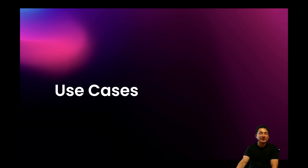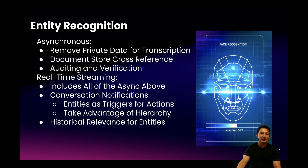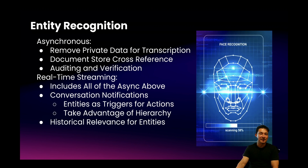Now that we have a good understanding about what entities are, let's talk about some very specific use cases that involve using them. In the asynchronous use case, entity recognition is primarily used for three things: one is for redaction or removing private data from the transcription; generating metadata around what entities are discussed in a given conversation for the means of cross-referencing between conversations; and then also for auditing and verification purposes. The real-time streaming use cases are a little bit more interesting — they include all of the things mentioned above in the asynchronous case, but they also include real-time notifications so that if an entity is discussed or talked about, you'll get a notification which could be used to trigger a given action.